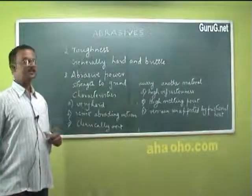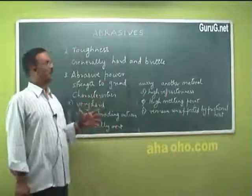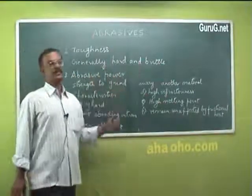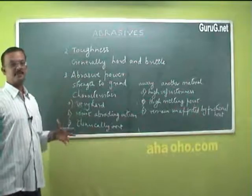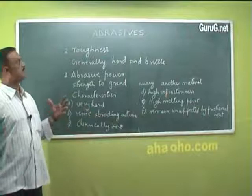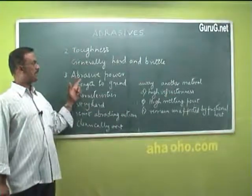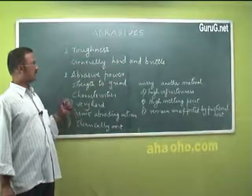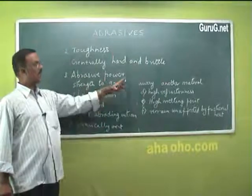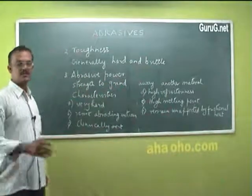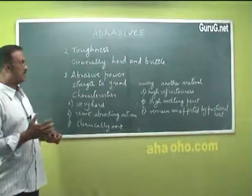The second property of abrasives is toughness. Generally these are hard and brittle, and these two properties put together are termed as toughness. More the toughness, better will be the capacity of an abrasive. The third property is abrasive power — it is the strength of the abrasive to grind away another material.